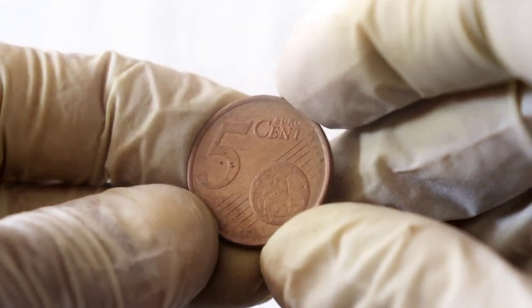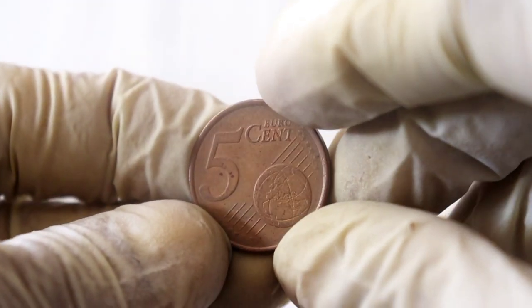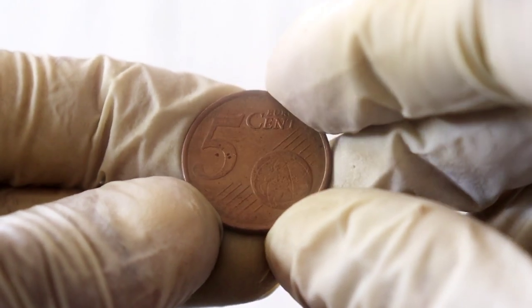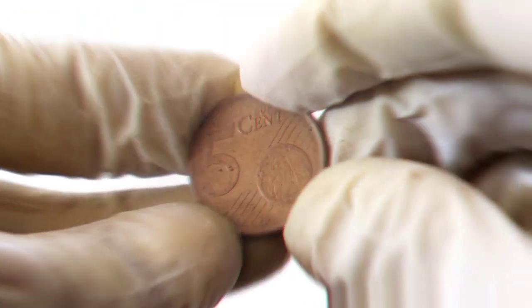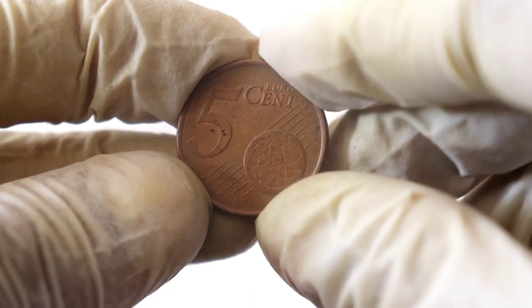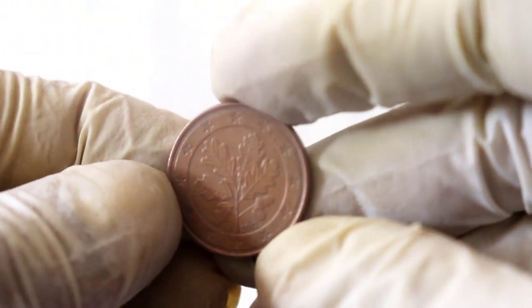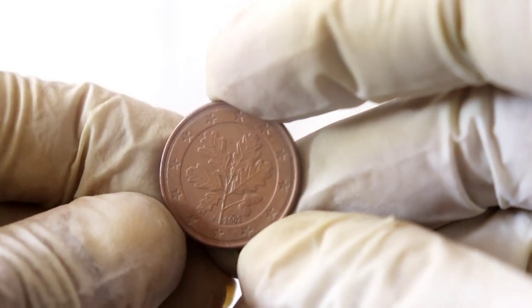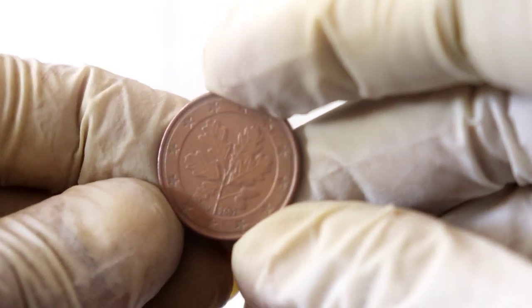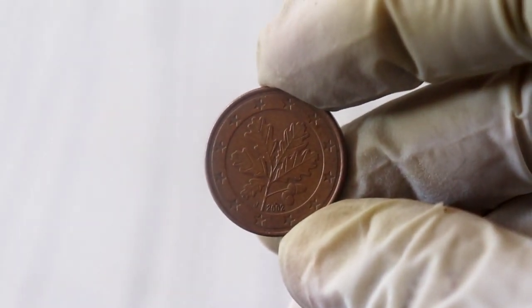Beyond its captivating design and rarity, the historical significance of the 5 Eurocent 2002 coin adds to its allure. This coin was part of the first Eurocent series, marking the transition from national currencies to the Euro in several European countries. As a result, this coin represents a crucial moment in European economic history.